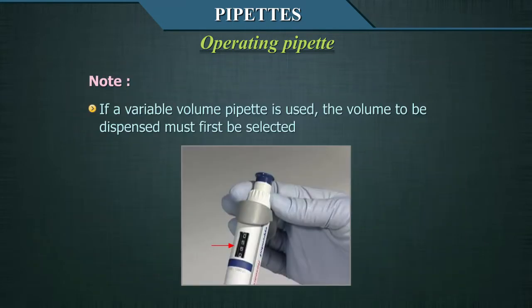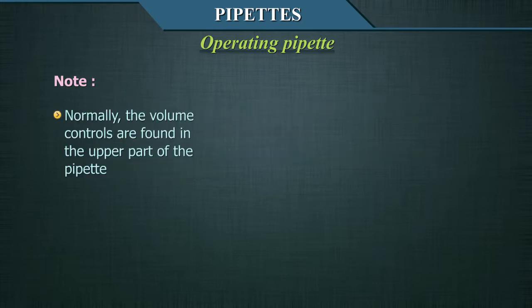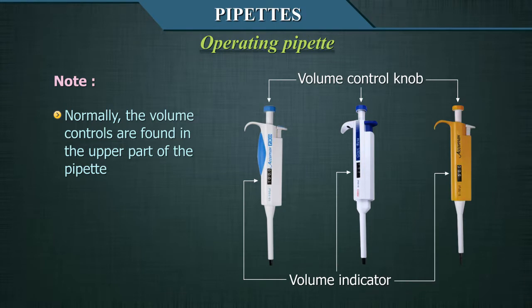Please note: if a variable volume pipette is used, the volume to be dispensed must first be selected by following the instructions indicated by the manufacturer. Normally, the volume controls are found in the upper part of the pipette, and it is necessary that the operator understands and learns to differentiate the scales.